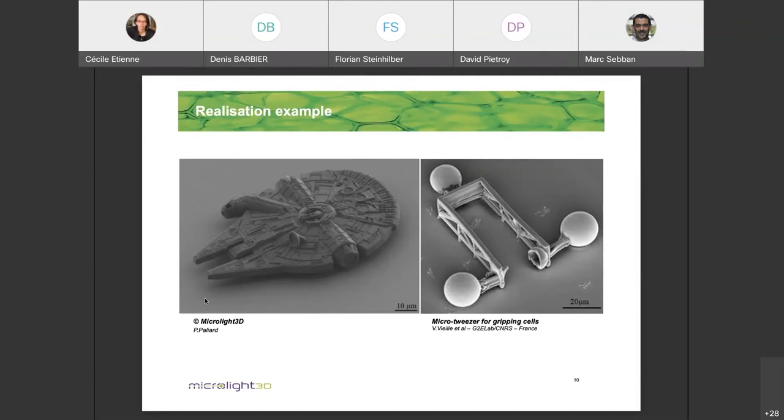Here is some more funny example. The famous flying vessel from famous movies on the right hand side. And this is a small gripping object that is used. The sphere are magnetic sphere by applying an external magnetic field. You feel that you can displace the gripper and then grip cells and move them around.